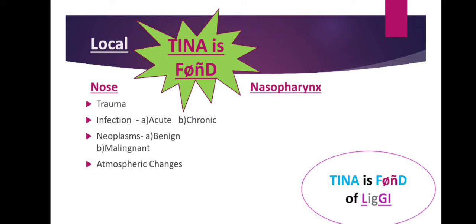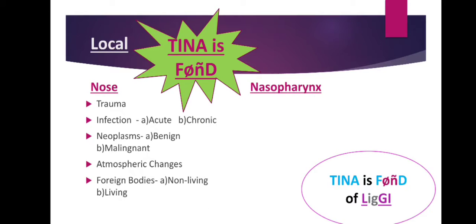Atmospheric changes occur at high altitudes or during sudden decompressions, as seen in cases of caisson disease, which can cause epistaxis. F stands for Foreign bodies, which can be non-living or living. Non-living examples include rhinolith, which forms in the nose and if ignored can irritate and cause bleeding. Living foreign bodies include maggots and leeches. D stands for DNS — deviated nasal septum — which affects the lateral wall and can cause epistaxis.